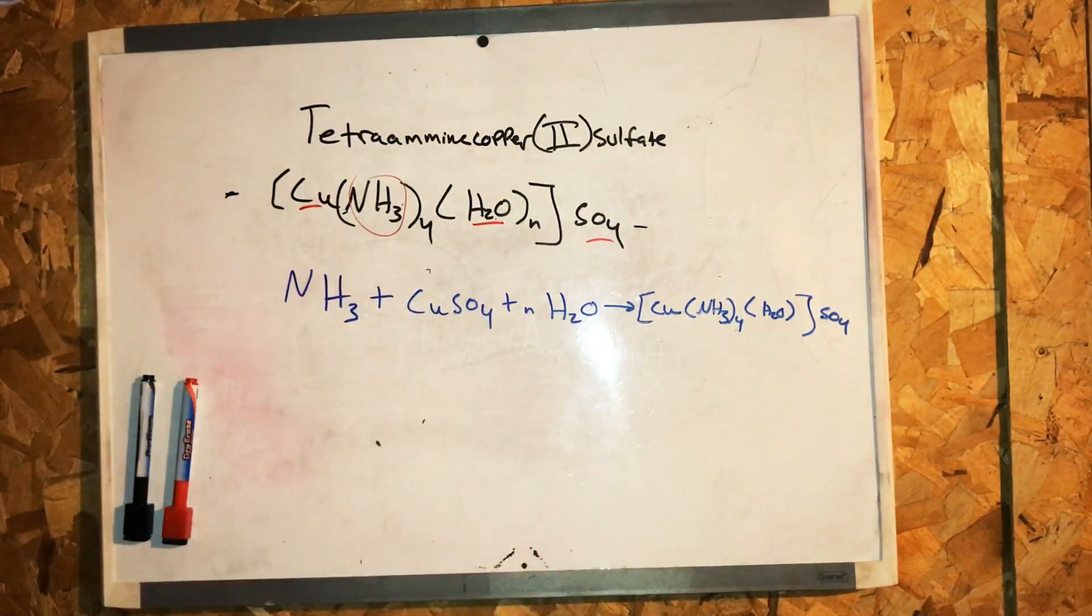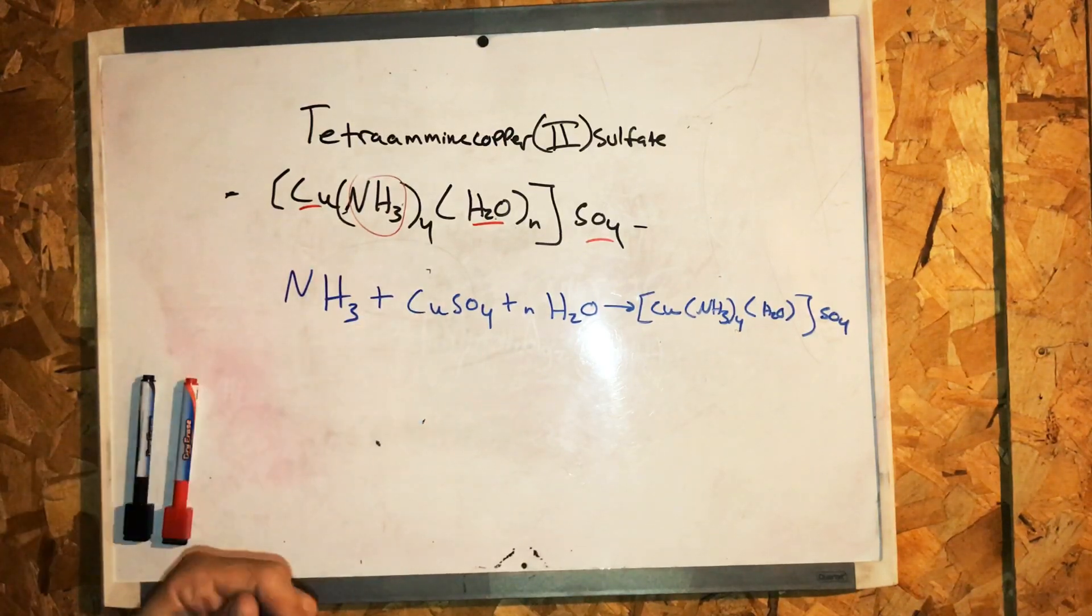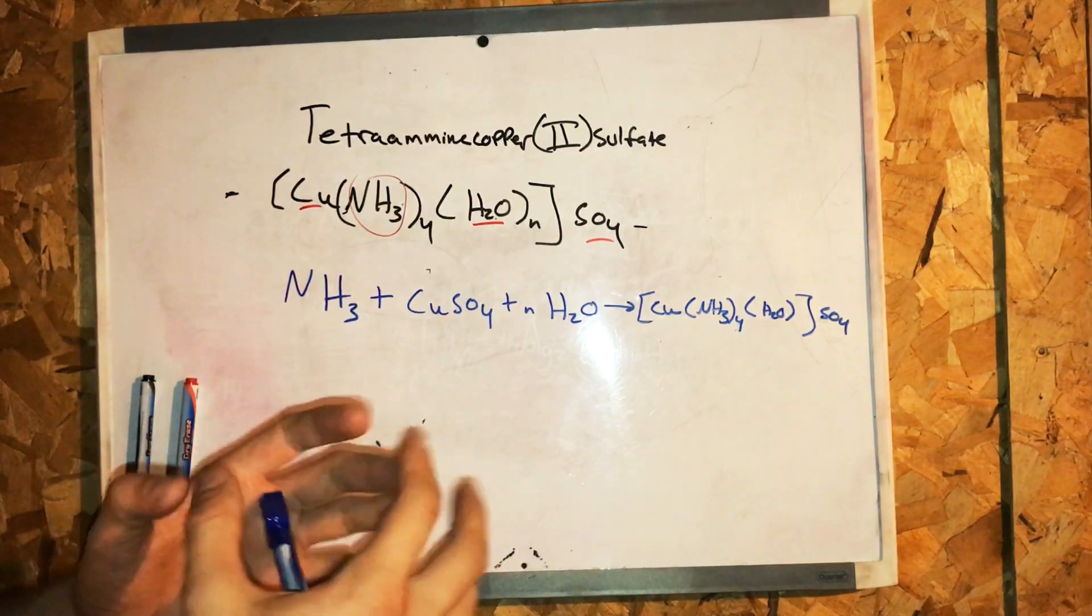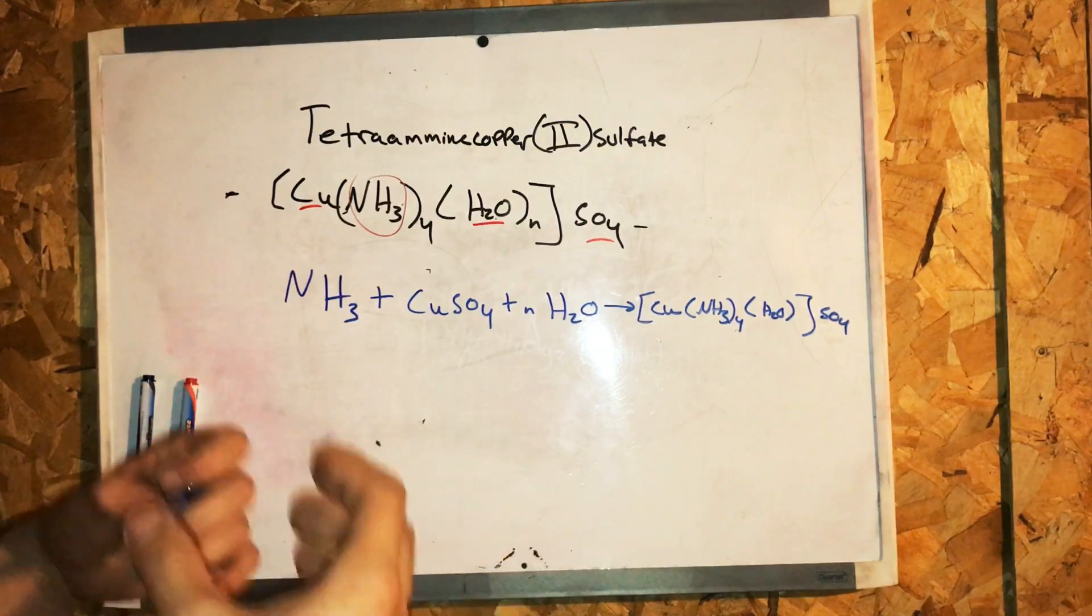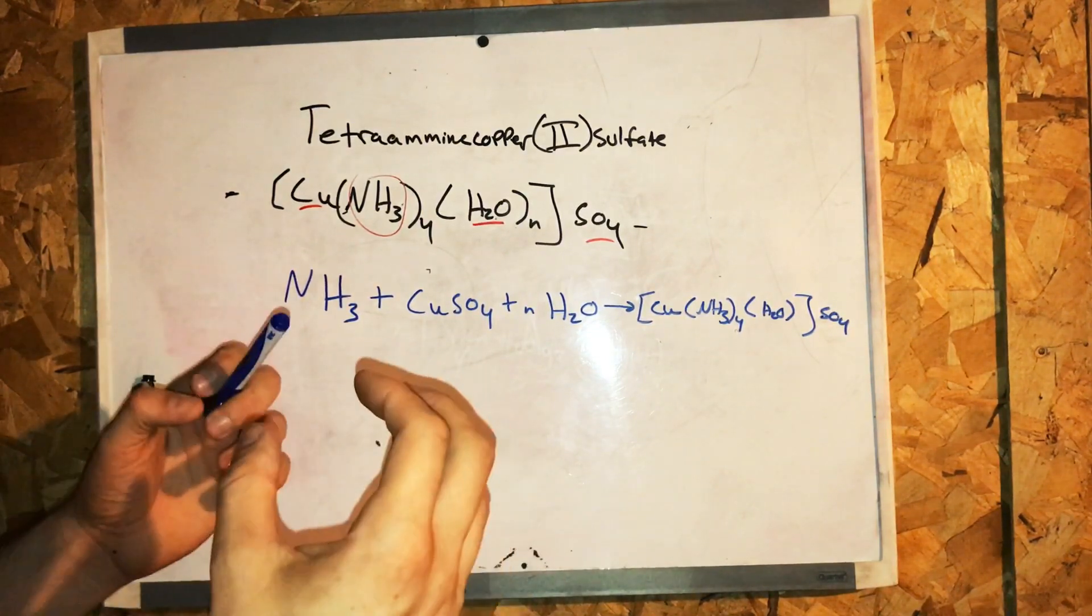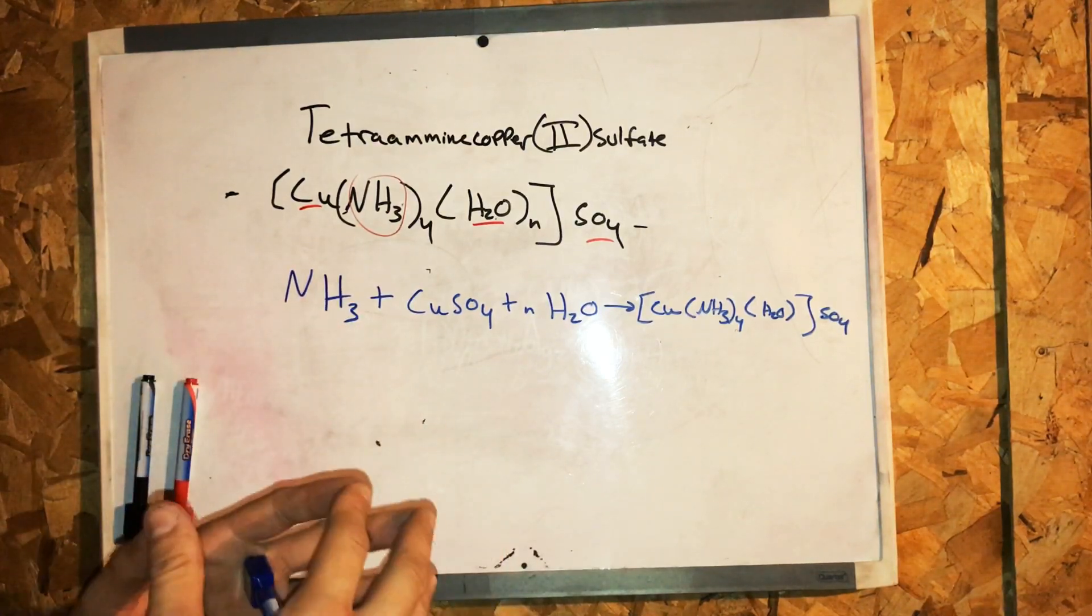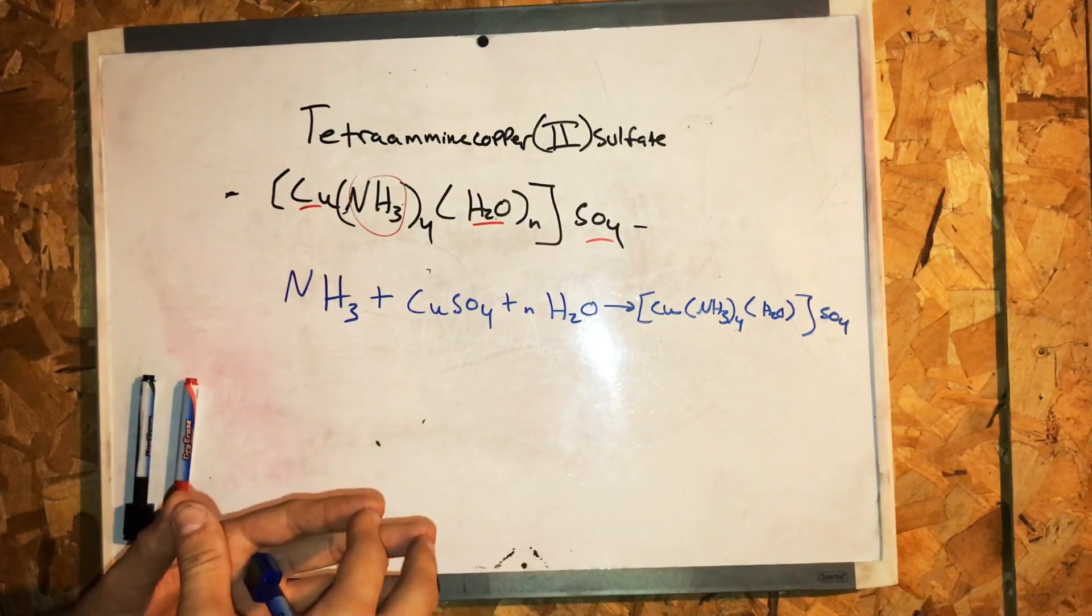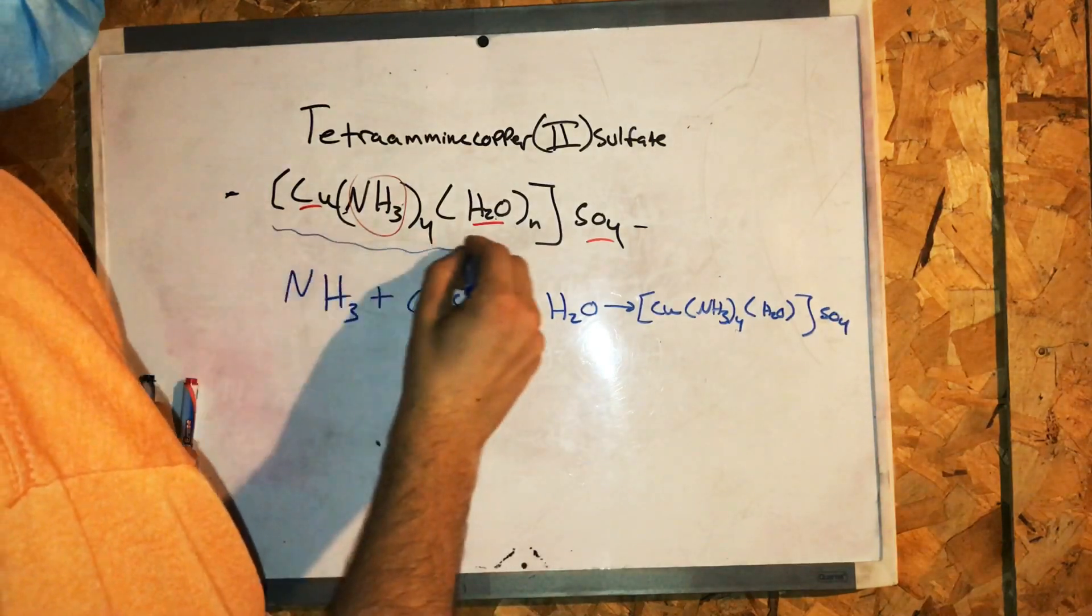An interesting fact: the deep blue crystalline solid tends to hydrolyze and evolve releasing ammonia upon standing in the air. It is fairly soluble in water. However, the brilliant dark blue-violet color of tetramine copper sulfate is due to the presence of the copper ammonia complex ion, as shown here.